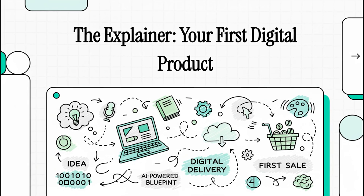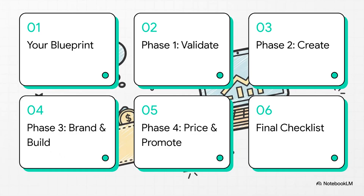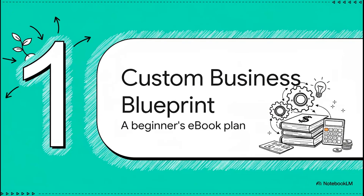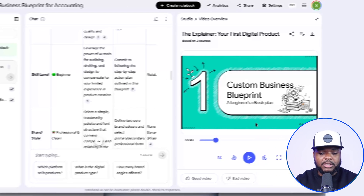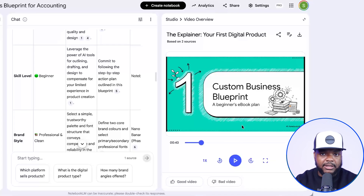Have you ever thought about creating your own digital product but got totally stuck on where to even begin? Well, in the next five minutes we're doing a full mini course — a complete AI-powered blueprint to take you from just an idea all the way to your very first sale. We'll start with your custom blueprint, then walk through four key phases: validating, creating, branding, and promoting. Then we'll wrap it up with a final launch checklist. We're going to follow a custom plan generated for a hypothetical person — an accountant who's a total beginner and wants to sell their very first ebook. The quality is really good, the AI-generated voice is really good, and it has a full understanding of exactly what I wanted to talk about.